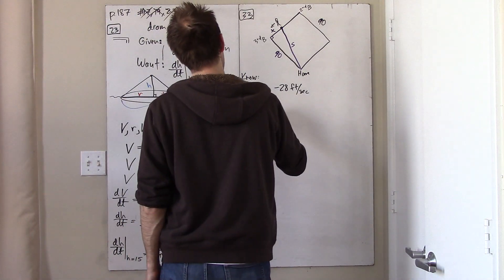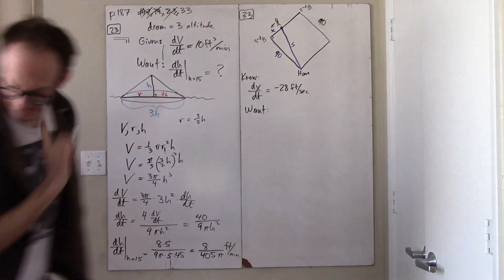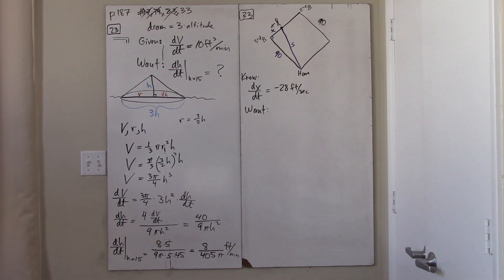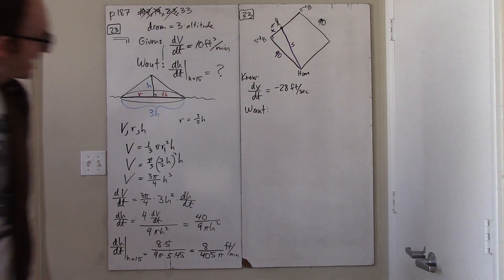What is it that we want? What we want is, at what rate is the player's distance from home plate changing?